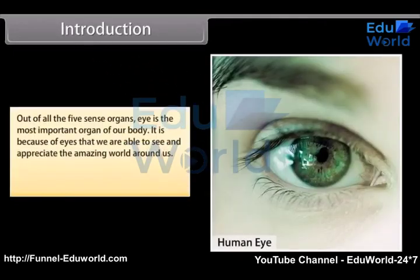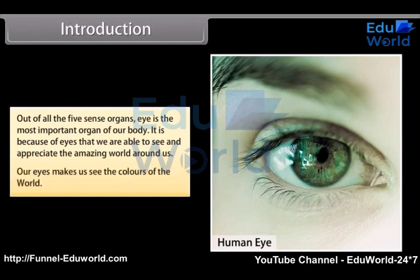Out of all the five sense organs, the eye is the most important organ of our body. It is because of eyes that we are able to see and appreciate the amazing world around us. Our eyes make us see the colors of the world.